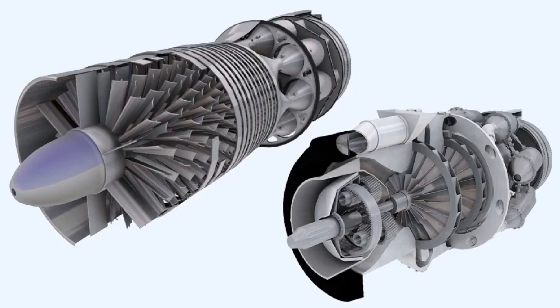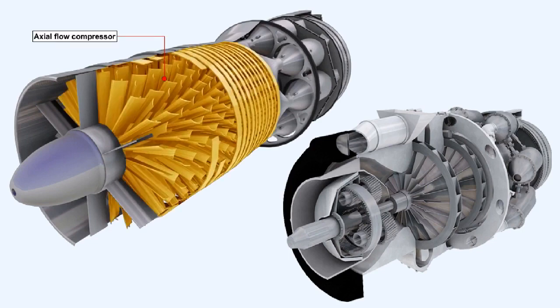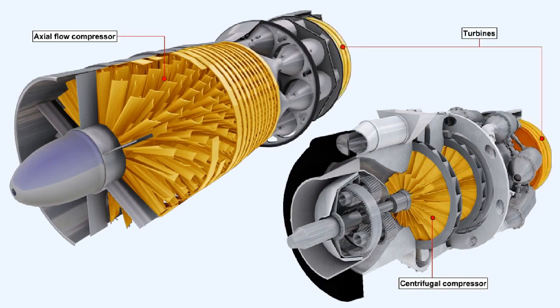There are two types of compressor being used in engines presently available. One allows axial airflow through the engine, while the other creates centrifugal flow through the engine. In each case, the compressors are driven by a turbine which is coupled to the compressor by a shaft.